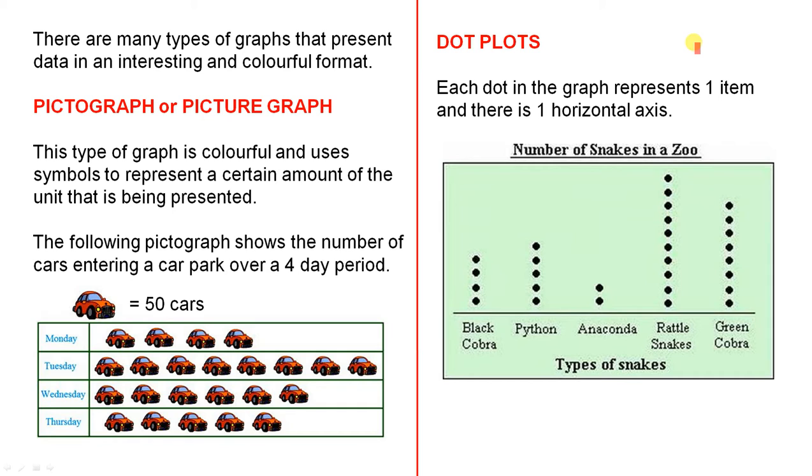Dot plots. Each dot in the graph represents one item and there is one horizontal axis. All that means is there is the horizontal axis there. Now this graph represents the number of snakes in a zoo.